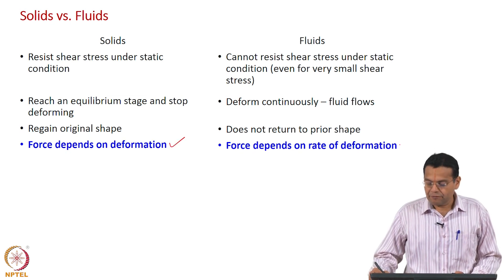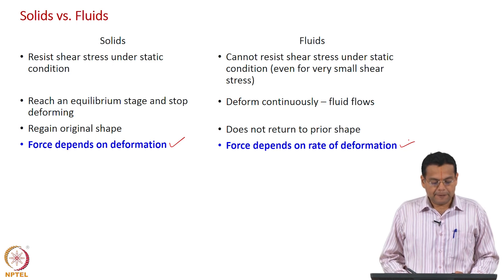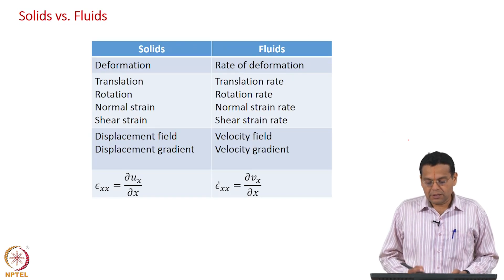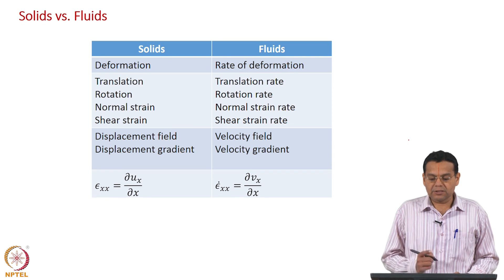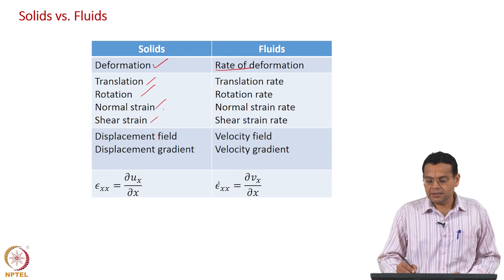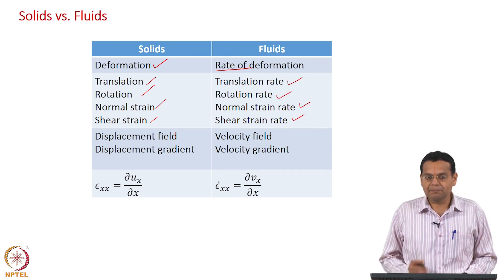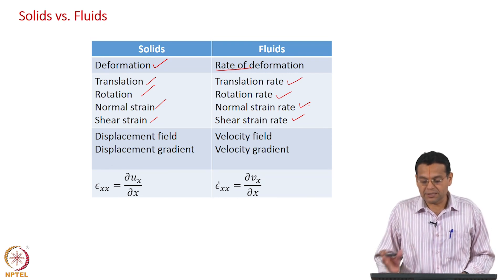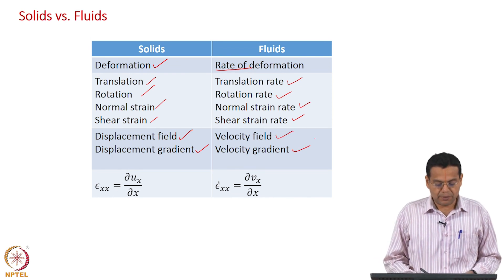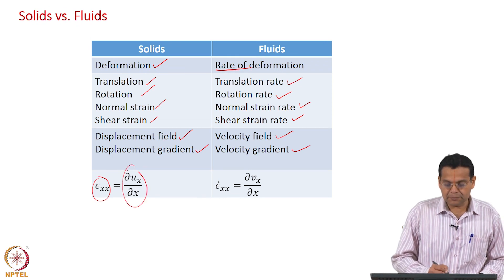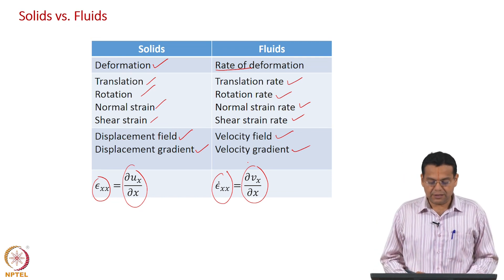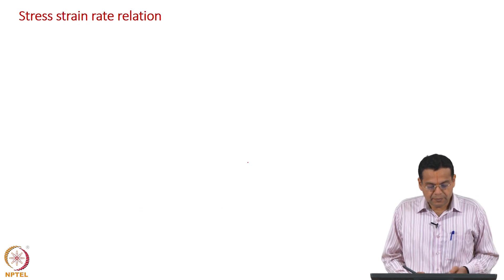Force depends on deformation for solids; force depends on rate of deformation for fluids. We also discussed the analogy table between solids and fluids: deformation here versus rate of deformation for fluids; translation, rotation, normal strain, shear strain — we just add 'rate' for fluids. We have displacement field and displacement gradient for solids, and velocity field and velocity gradient for fluids. Importantly, normal strain is related to the gradient of displacement, while normal strain rate is related to the gradient of velocity.